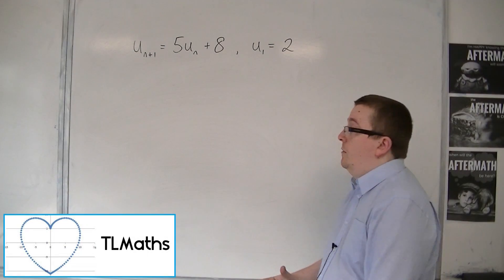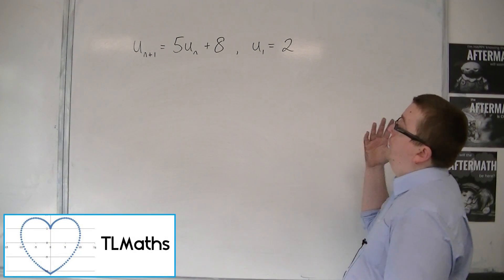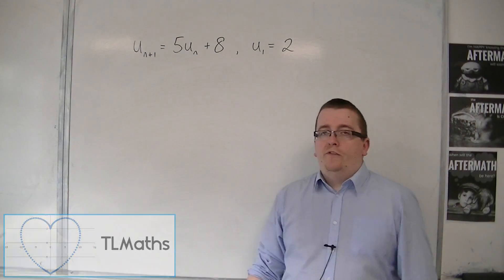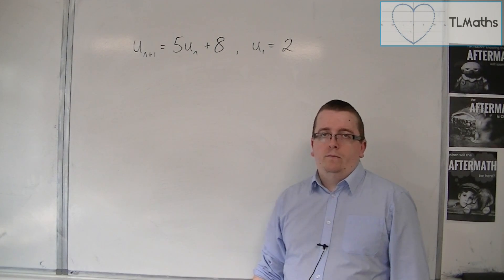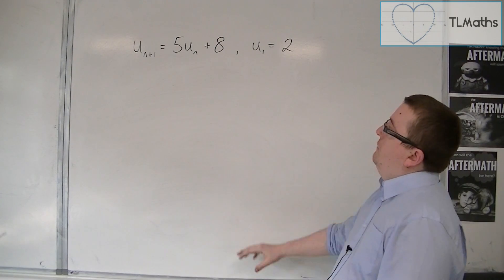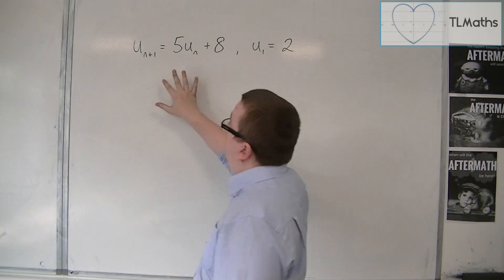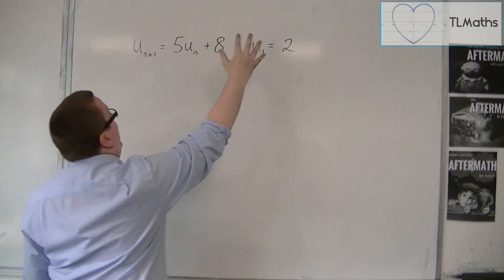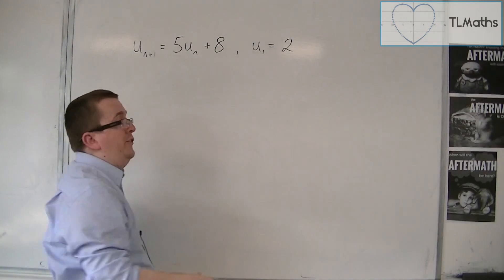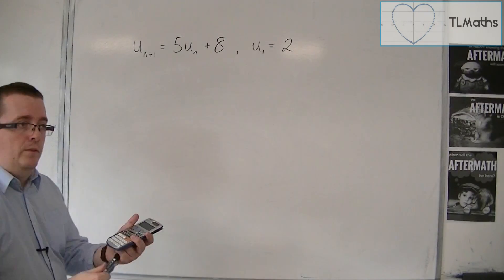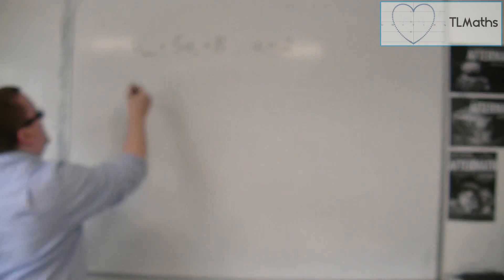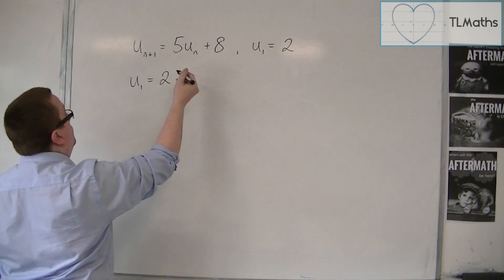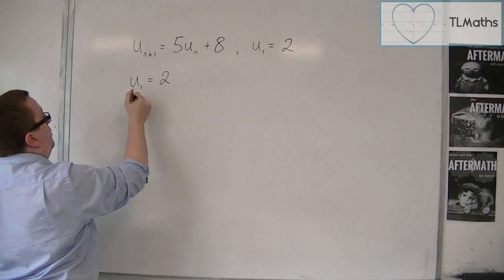So let's say I'm asked to write down the first five terms of this inductive definition. I have the recurrence relation which tells me how to get from one term to the next, and I'm given my starting value. So I can immediately go in and say u1 is equal to 2 — we know that, we're told that.